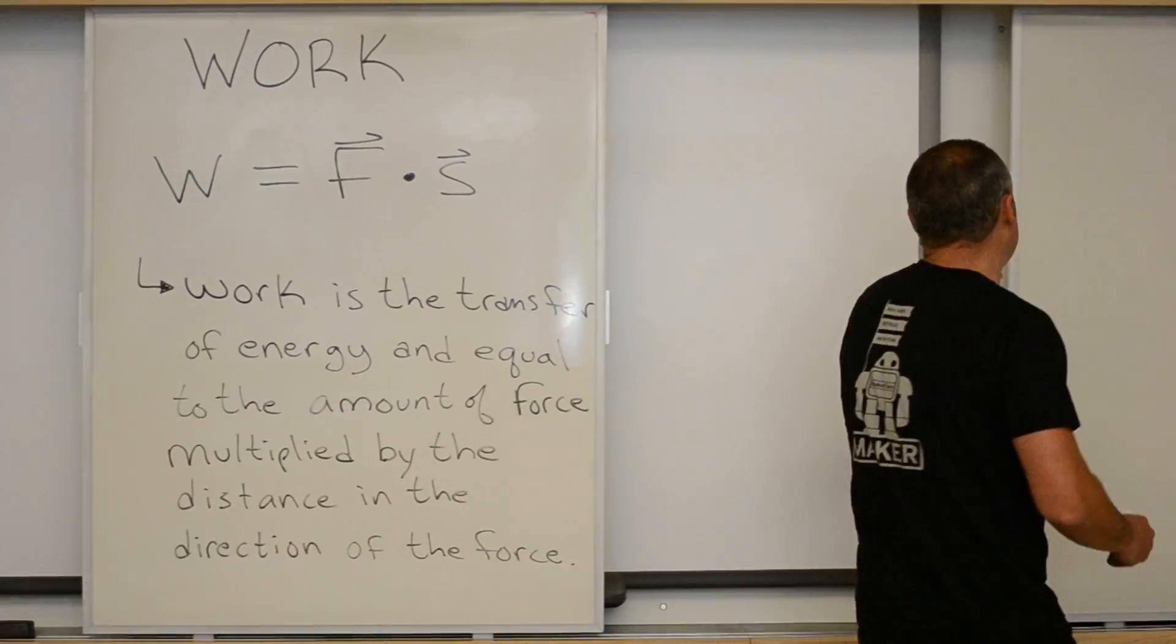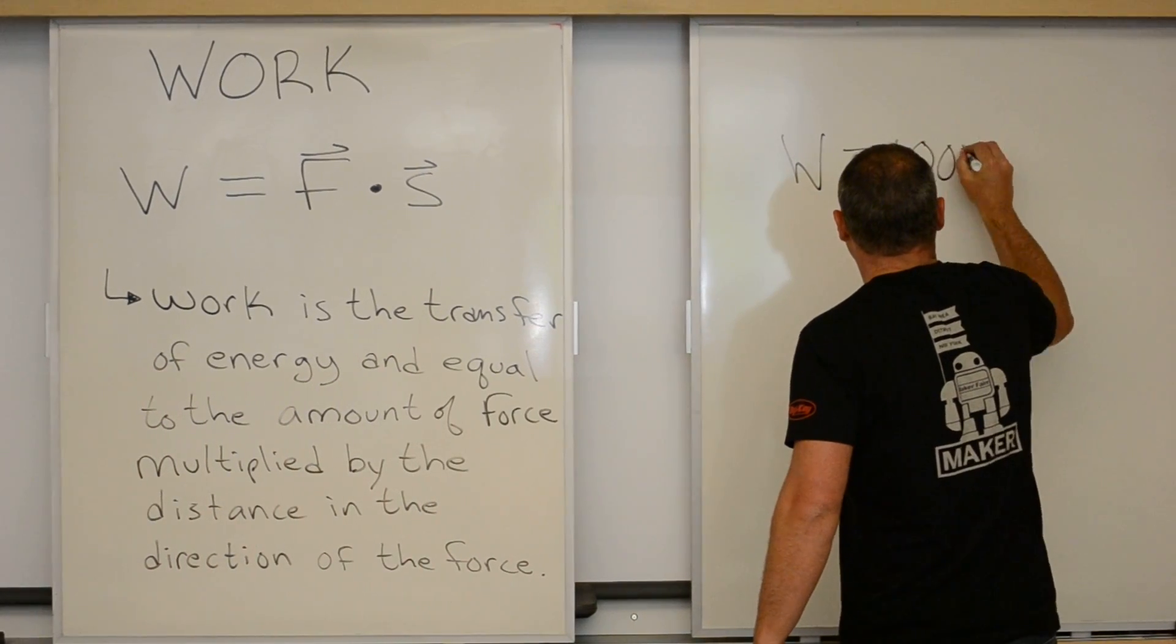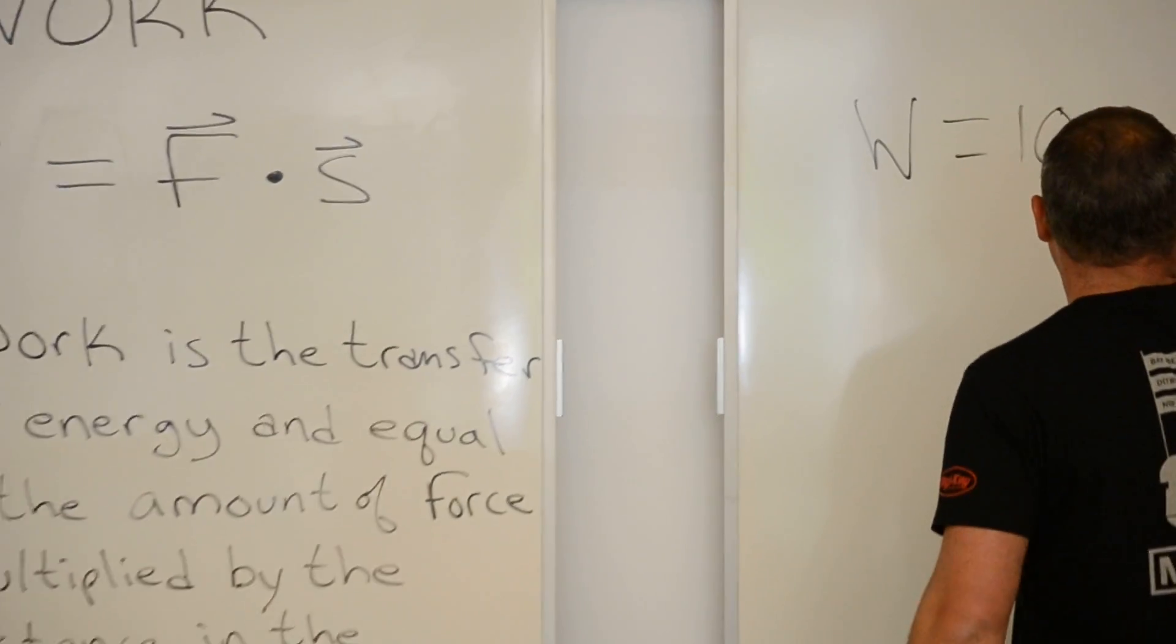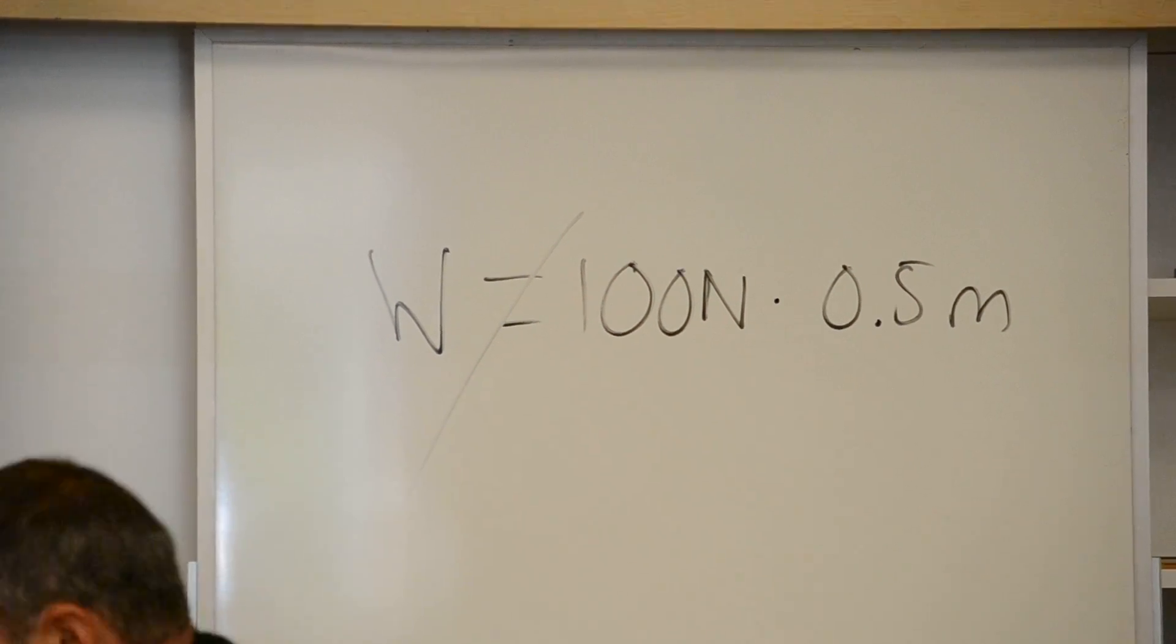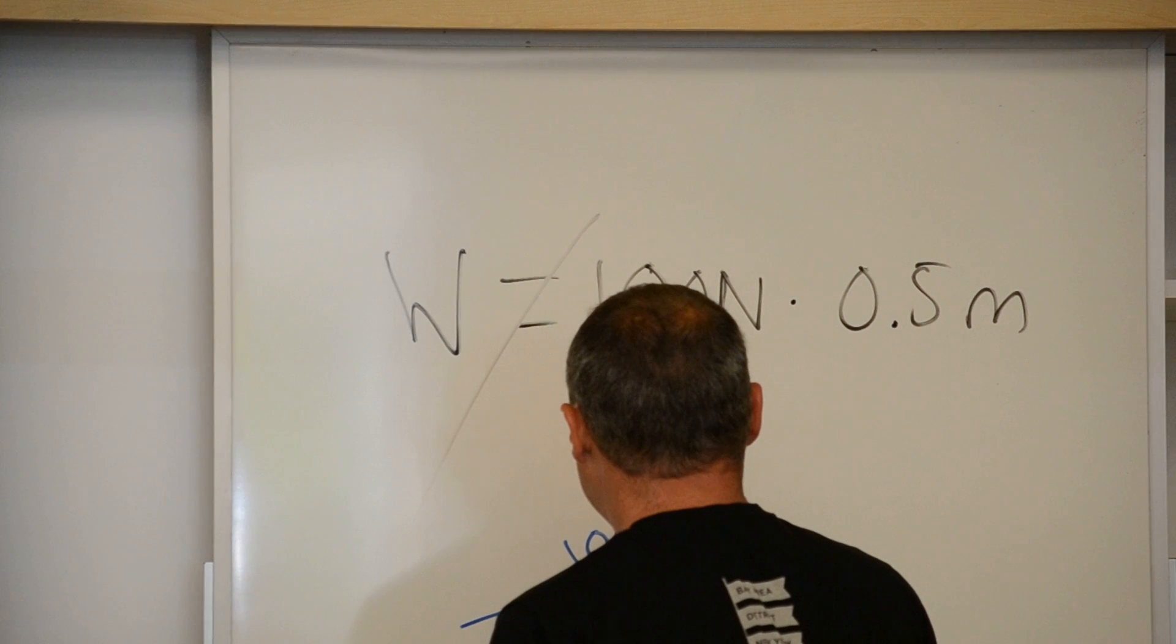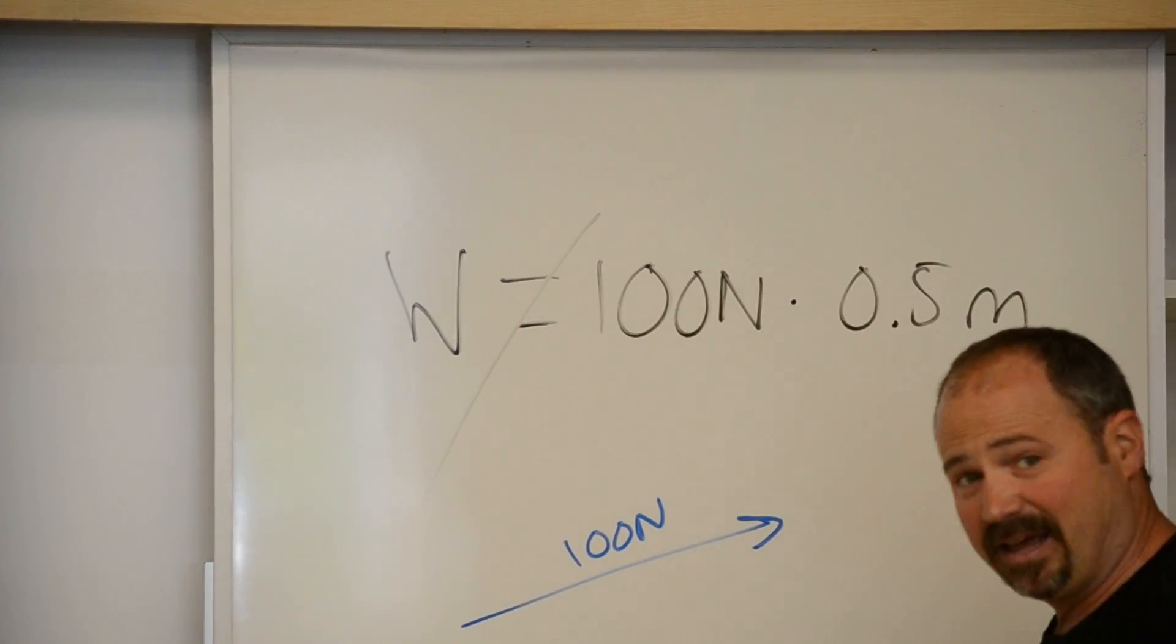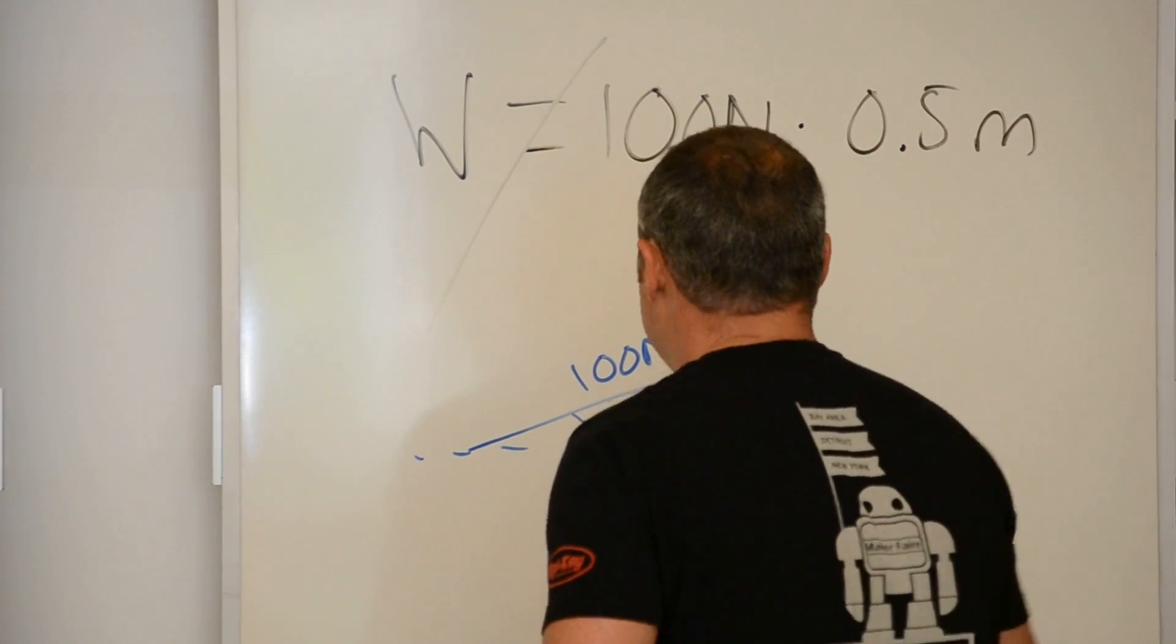Well, I'll tell you what it's not. The work is not equal to 100 newtons times half a meter. That's not the situation because my force vector of 100 newtons is pointing like this and it's at a 30 degree angle.